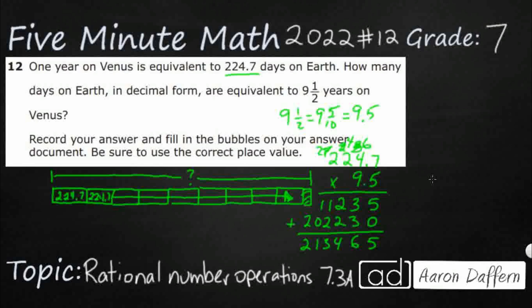So how many digits do we have behind the decimals in our factors? I've got 1. I've got 2. Which means I need 2 digits behind the decimal in my product. So it's going to be 2,134.65. It's a random number, but it's supposed to be a random number.